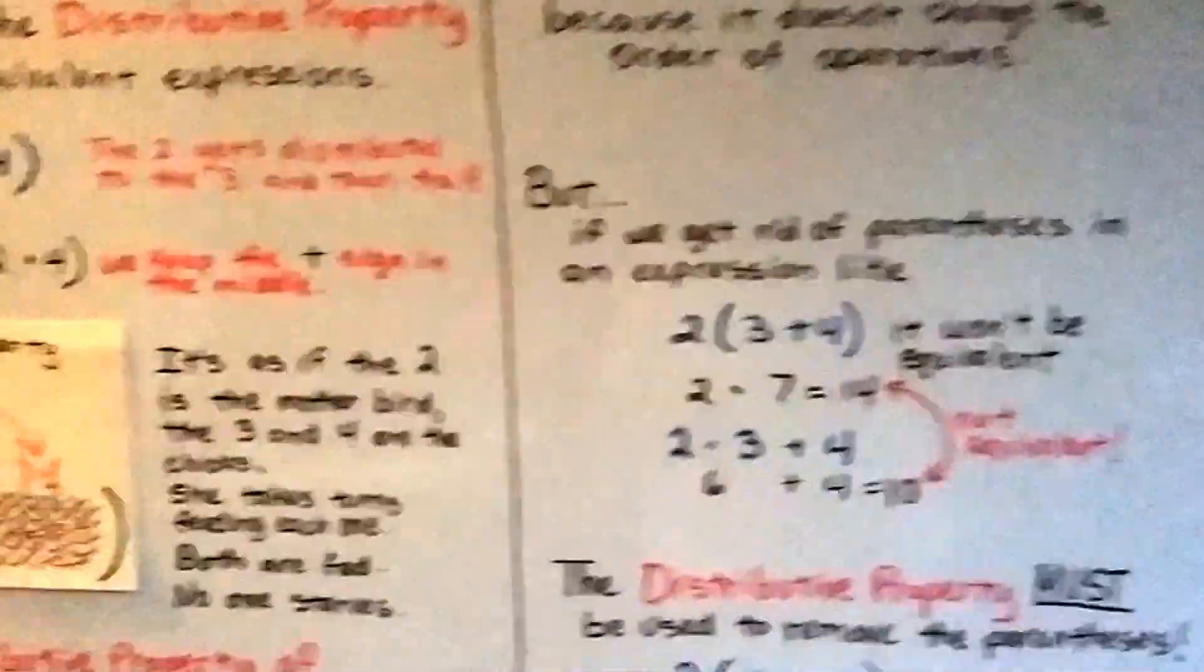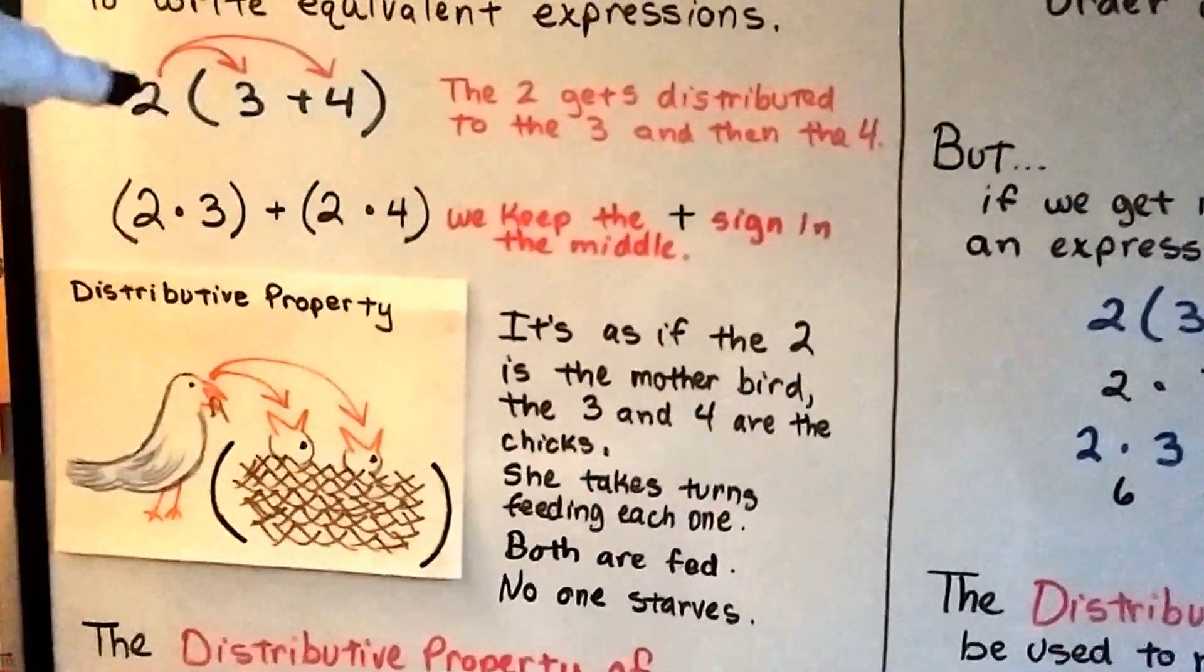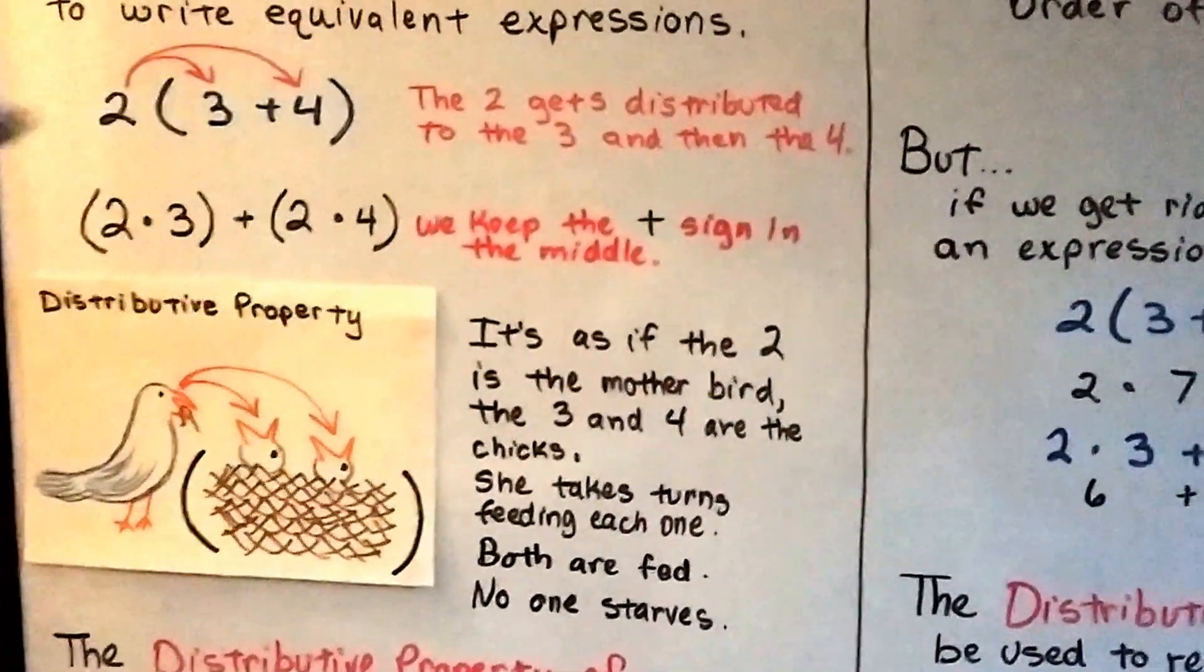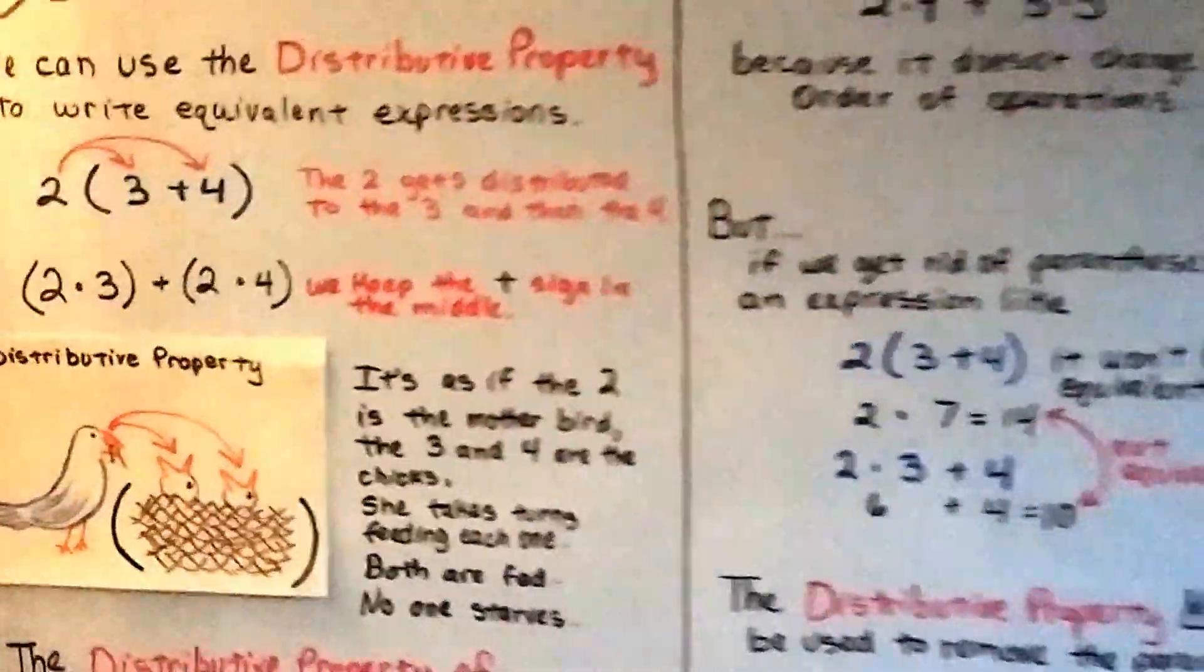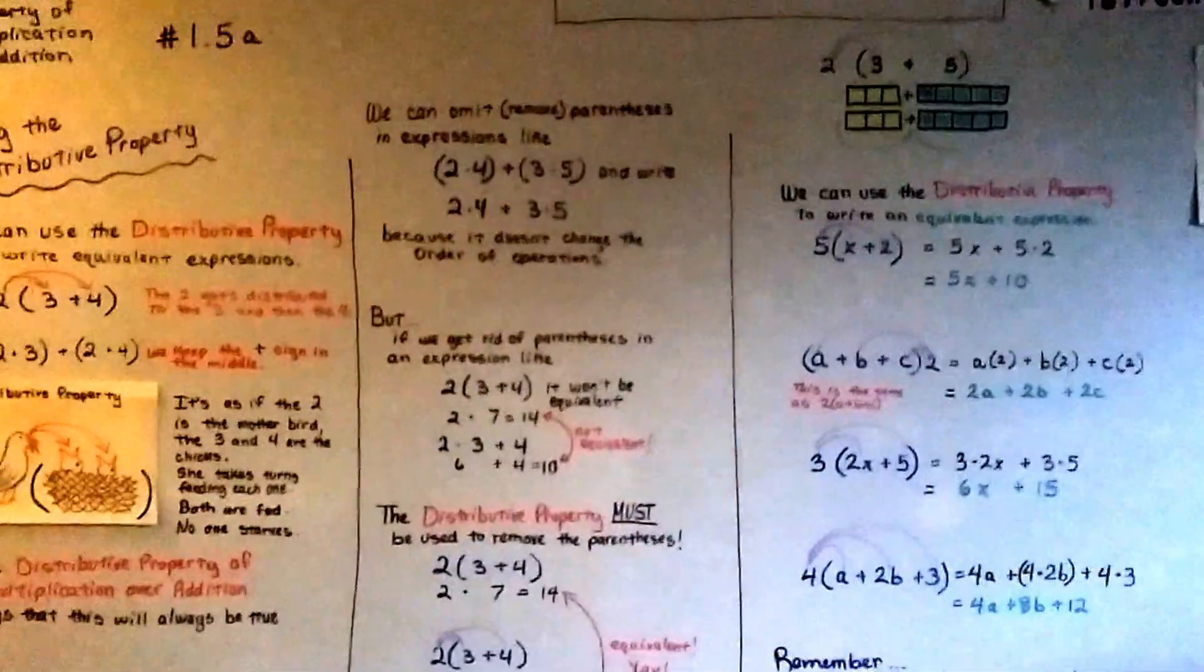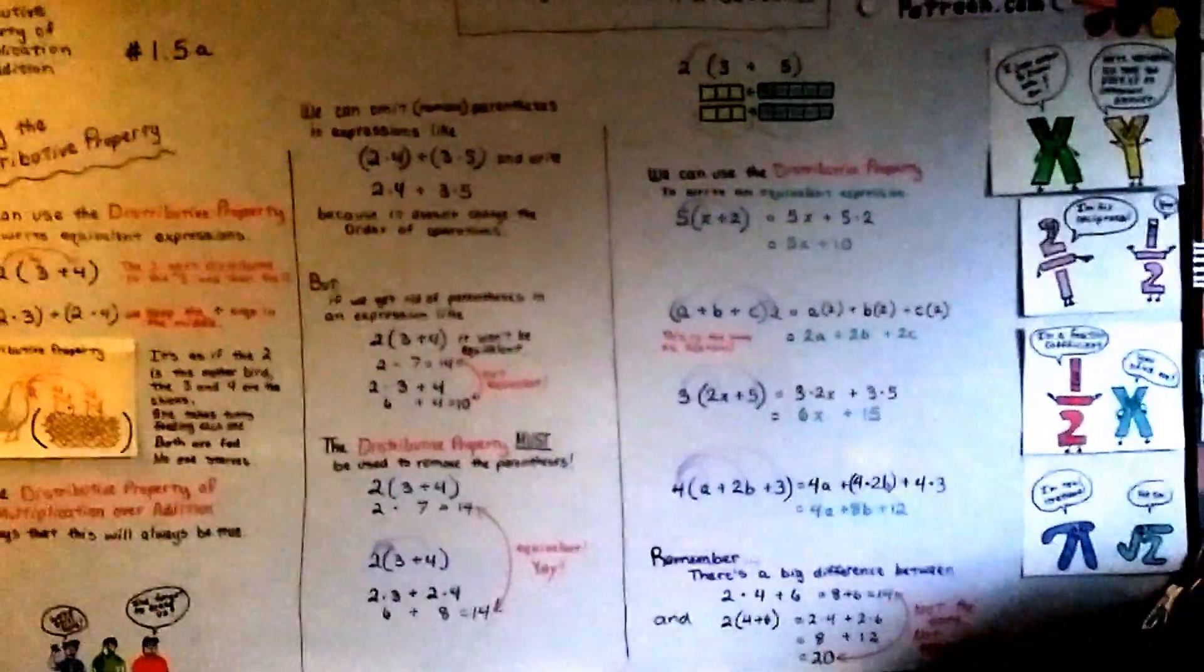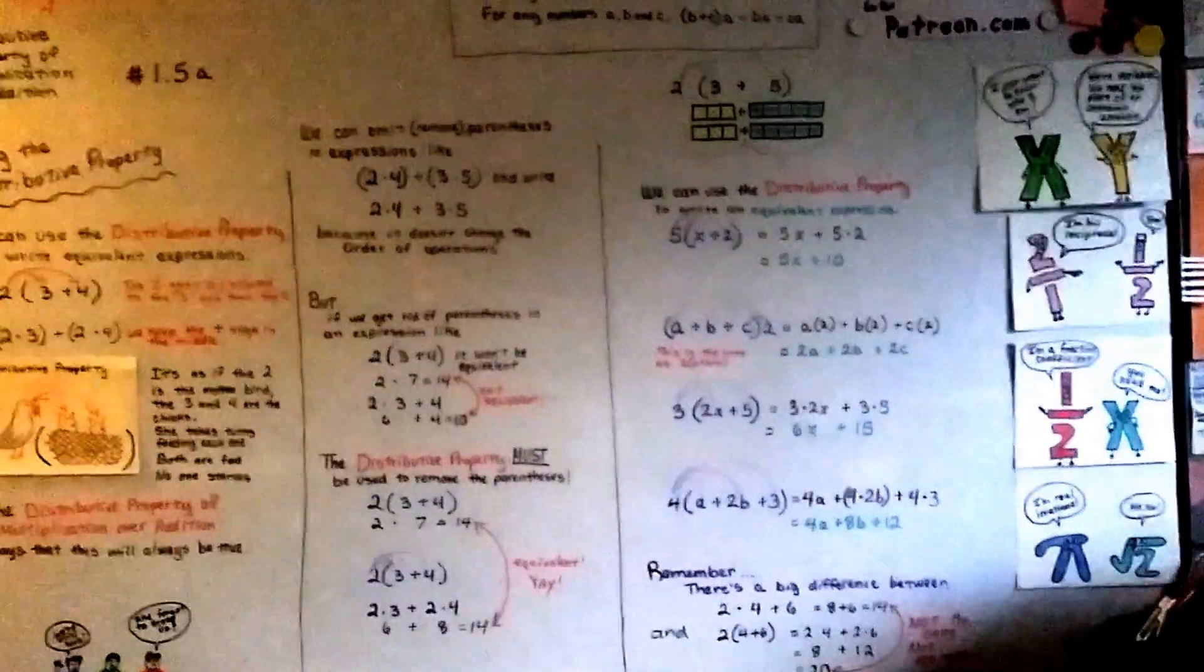Alright? Everyone remember my mother bird in the parentheses nest and how she takes turns just like these numbers, feeding one and then feeding the other, but remember to keep your plus sign in the middle. We're going to go on to 1.5b and we're going to talk about factoring these. Probably do that tomorrow because it's starting to get dark in here.